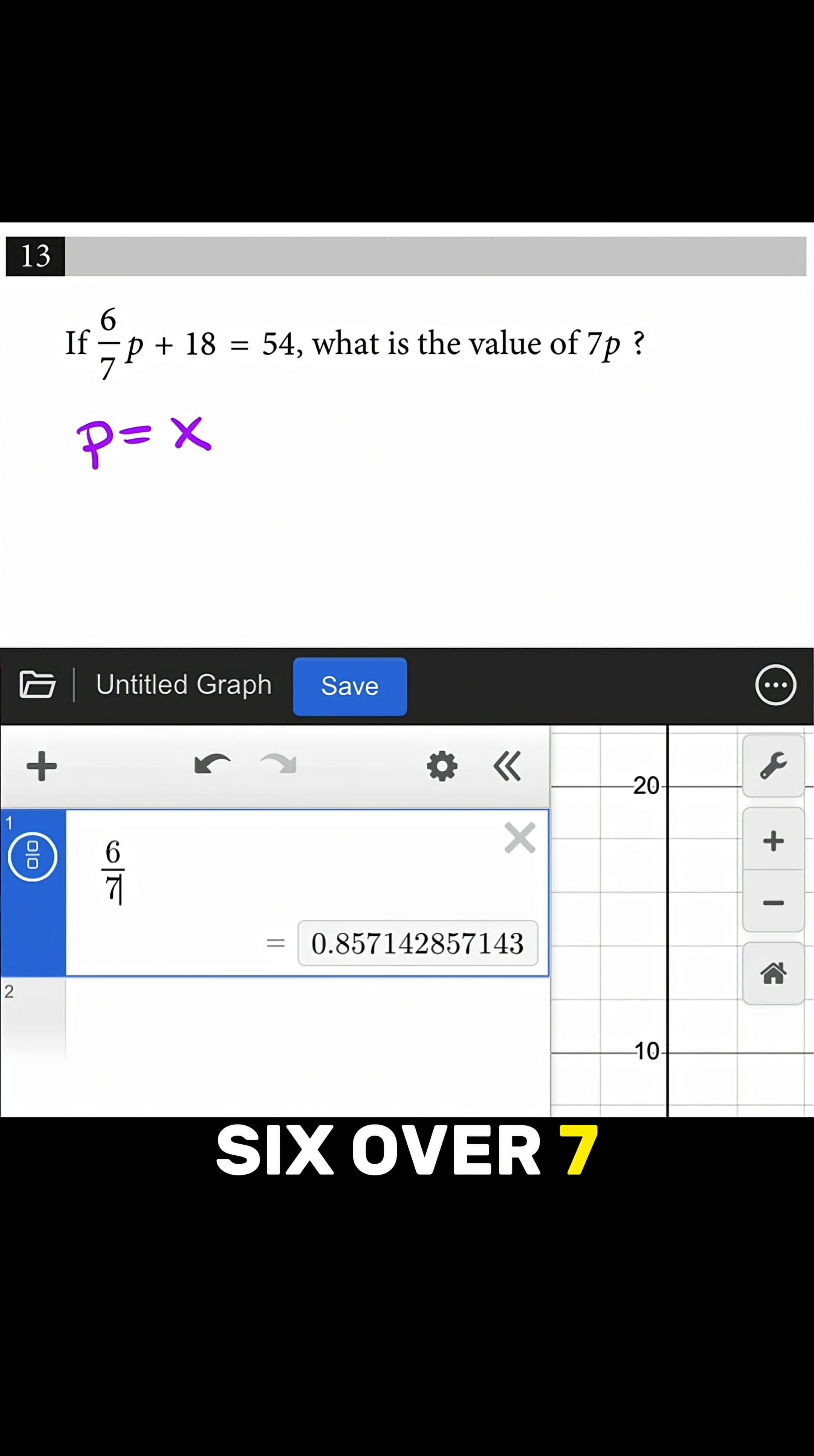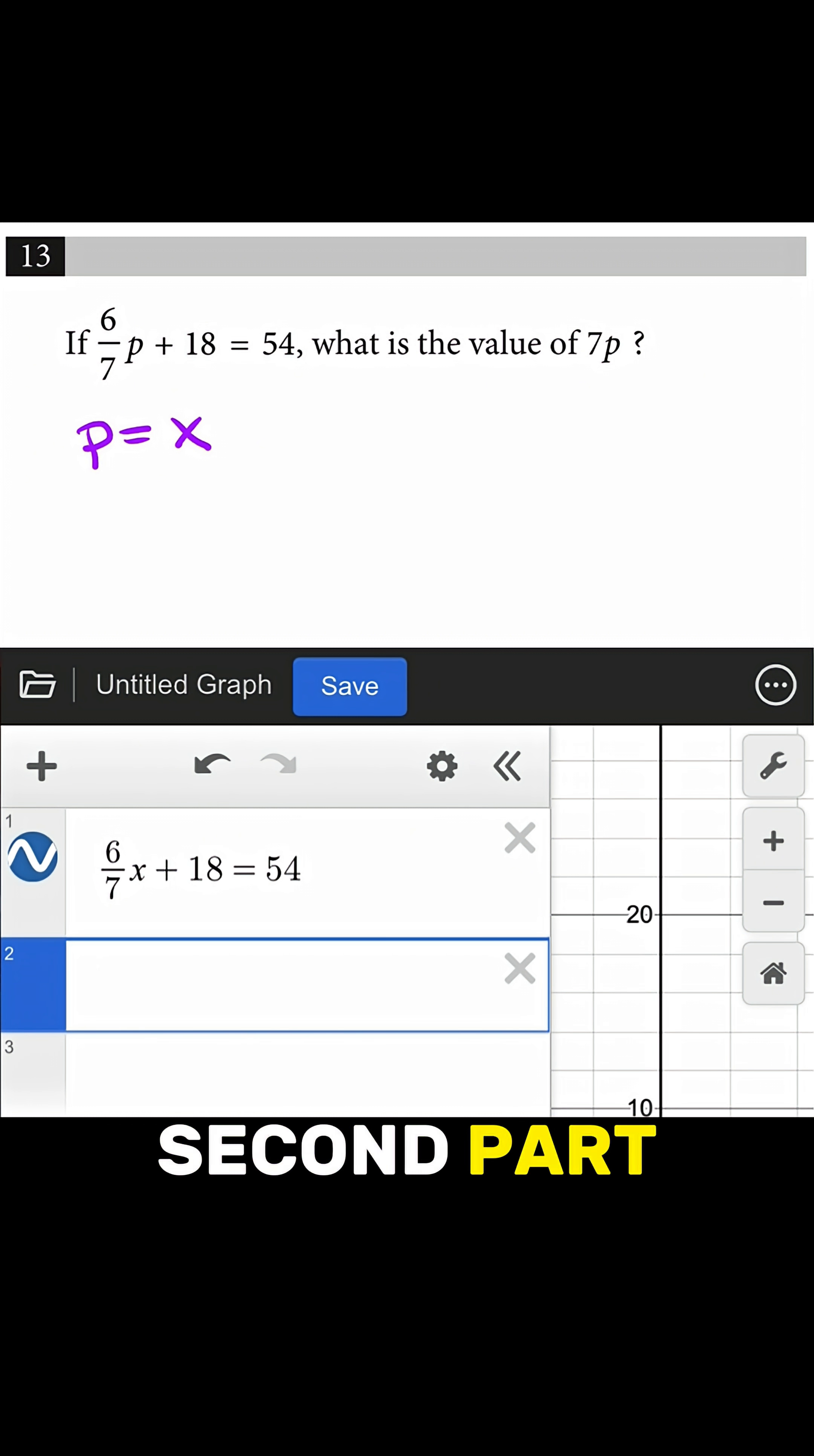So 6 over 7x plus 18 equals 54. And then here I'll type the second part, which is what is the value of 7p? But again, I'm changing p to x, so I'm going to write 7x.